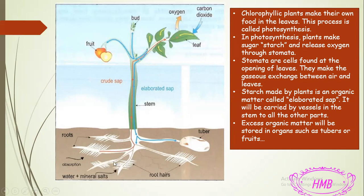As you can see, the plant has roots. Through the roots, water and mineral salts are absorbed by the root hair. If you focus on the red arrow, this represents the crude sap. The crude sap contains water and minerals absorbed by the roots and then transported through the vessels to all parts of the plant. This picture shows the two saps transported in the plant: the crude sap is transported upward from the roots to the leaves, while the elaborated sap is made in the leaves and transported down to the other parts. Both are transported through special vessels in the stem.